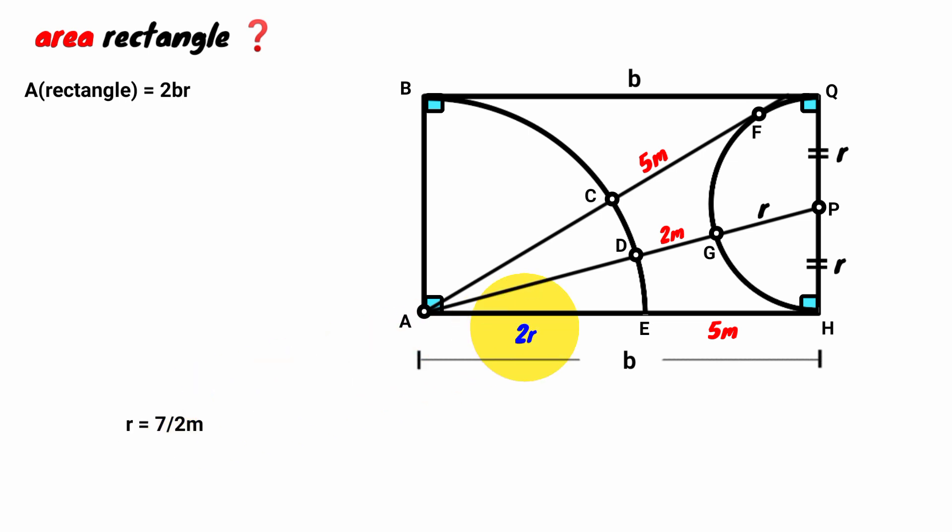Substitute it here. 2 times 7 over 2 meters is 7 meters. The summation of 7 meters and this 5 meters give the value of this B. So B equals 7 meters plus 5 meters. 7 meters plus 5 meters is 12 meters. Substitute the values of B and R here. 2 times 12 meters times 7 over 2 meters is 84 meters squared. So area of rectangle equals 84 meters squared.